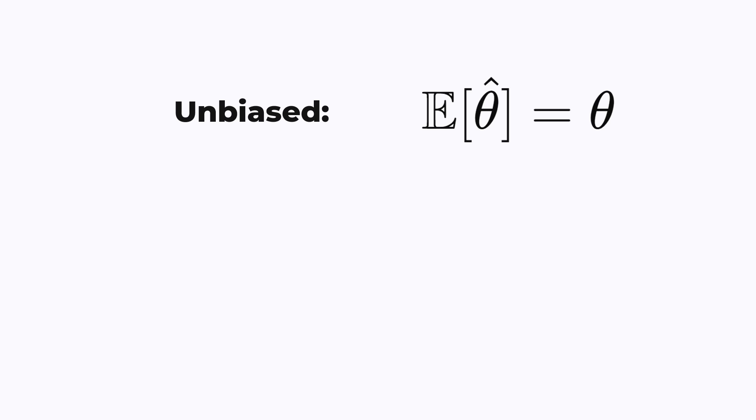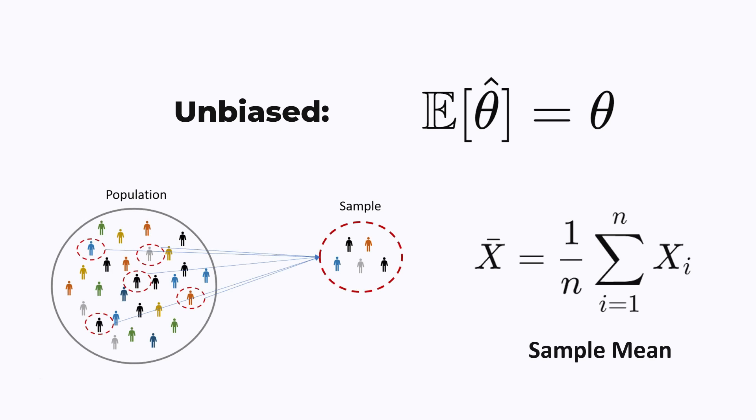A really simple example is the sample mean. If we are estimating some attribute of the population, like the average height, we can get an unbiased estimator by sampling randomly some people from the population and taking the average of their heights. This is an unbiased estimate of the population mean.